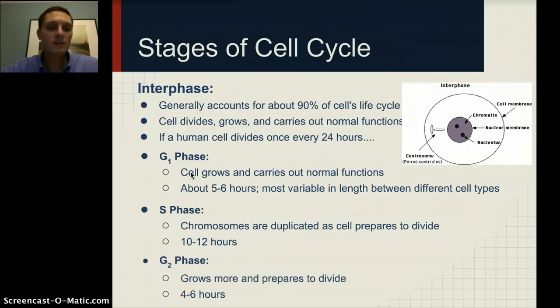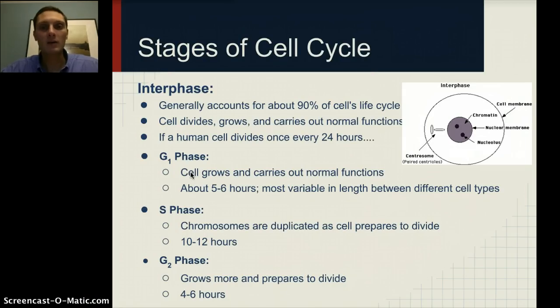The G2 phase would be about four to six hours. This is when the cell is growing a little bit more and preparing to divide. Mitochondria, chloroplasts, and a few other organelles are starting to duplicate as well in preparation for the cell to divide.